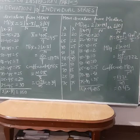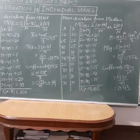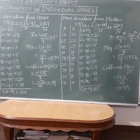The first step is to check whether the series is arranged or not. This series is not arranged, so we are going to arrange it in ascending order. In ascending order the series is: 20, 22, 25, 38, 40, 50, 65, 70, and 75.